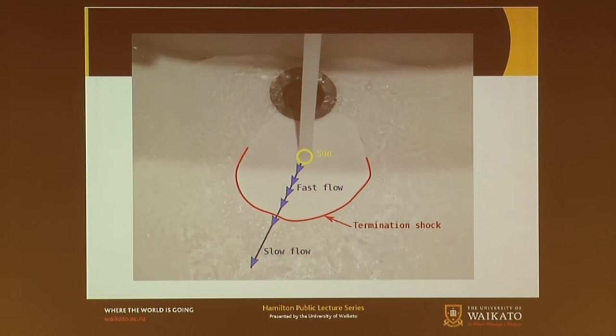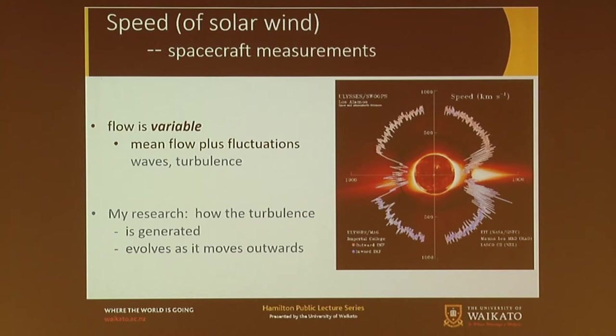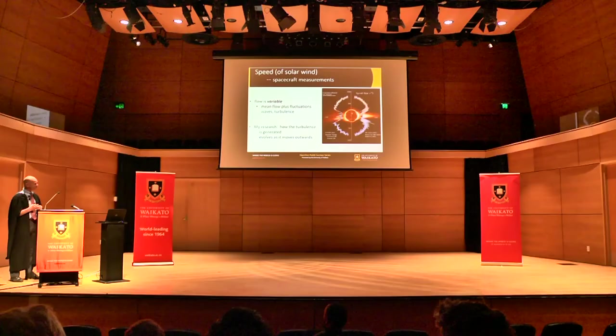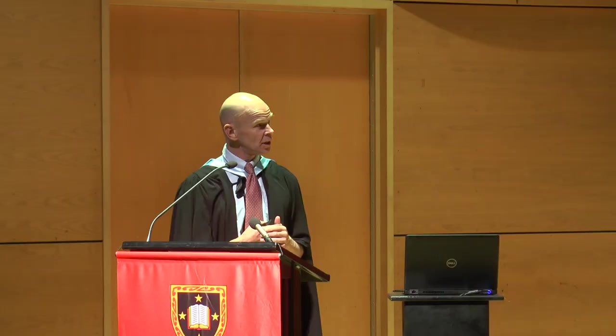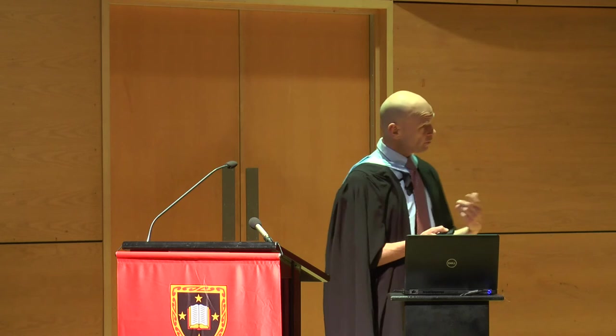How do we know any of this? We need to verify that theorists haven't just made stuff up. There have been a whole lot of spacecraft put into space from NASA, the Japanese Space Agency, the European Space Agency, and others. They've made measurements of all sorts of things: the electric field, the magnetic field, how fast it's going, the mass density of the plasma.